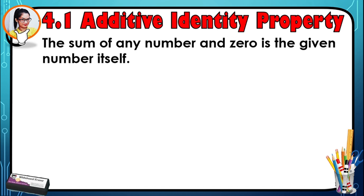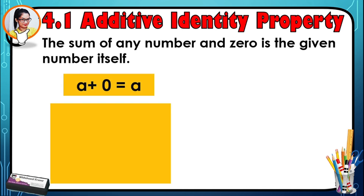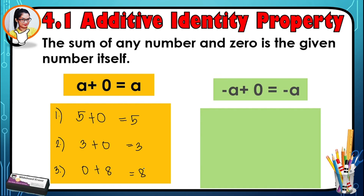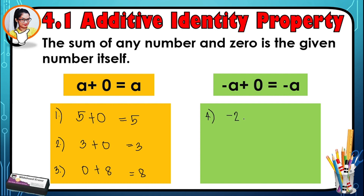Additive identity property states that the sum of any number and zero is the number itself. For example, five plus zero is five, three plus zero is three, and zero plus eight is eight. With negative numbers: negative two plus zero is negative two, zero plus negative five is negative five, and negative eight plus zero is negative eight. It's very easy.